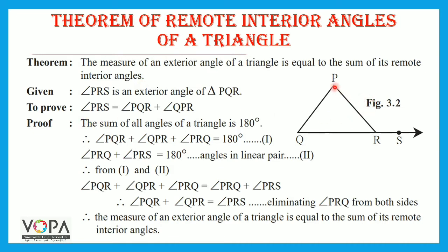Observe the figure. Angle PRS is an external angle of triangle PQR — this is given. What we have to prove is that angle PRS, the measure of the exterior angle, is equal to the sum of its remote interior angles. Angle P and angle Q are the remote interior angles of exterior angle PRS. Remote means far — these two angles are far from the exterior angle PRS. So we have to prove that angle QPR plus angle PQR equals angle PRS.